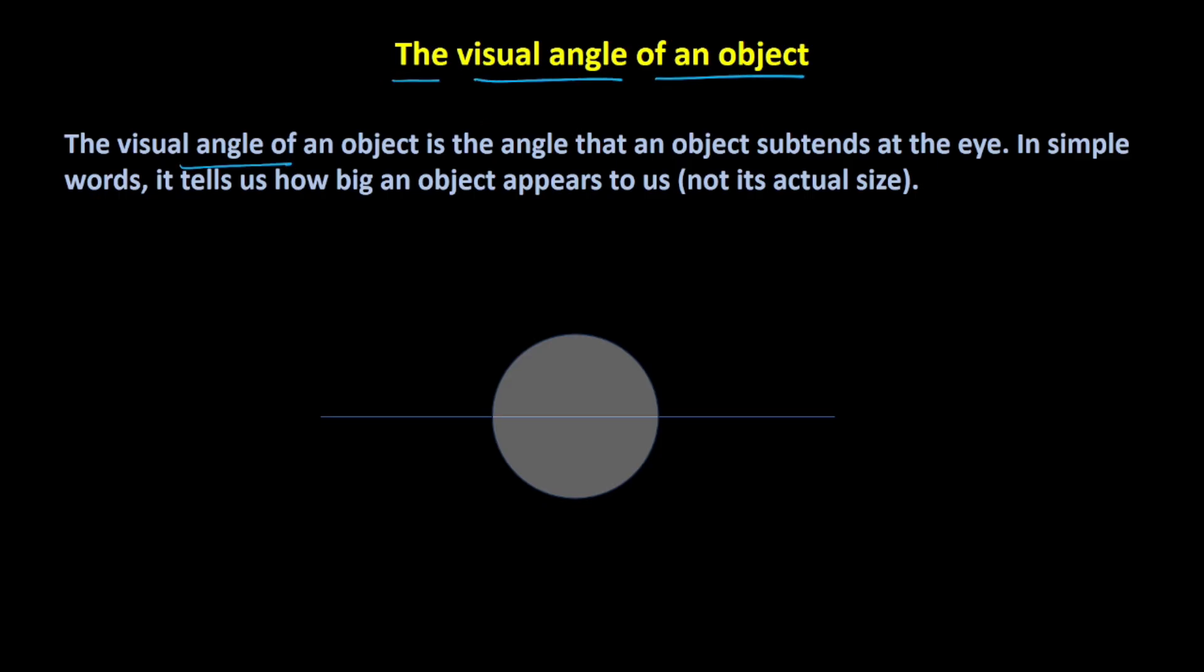The visual angle of an object is the angle that an object subtends at the eye. In simple words, it tells how big an object appears to us.